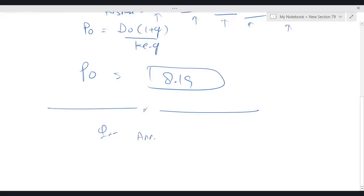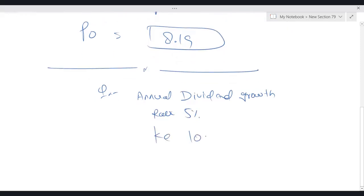Annual dividend growth rate is 5 percent, ke is 10 percent, D0 is $2, and examiner is asking to calculate P0.